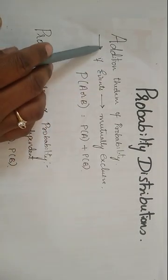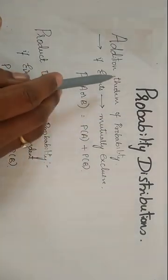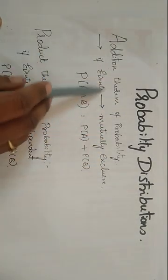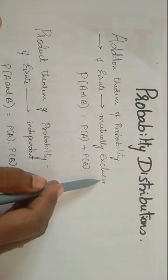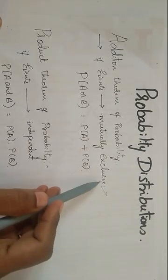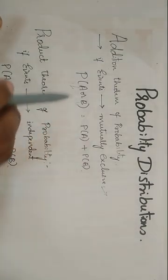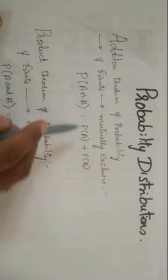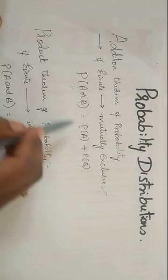Now we will discuss the addition theorem of probability. The addition theorem of probability says: if the events are mutually exclusive — mutually exclusive means there is no common element between A and B — then P of A or B will be equal to P of A plus P of B.